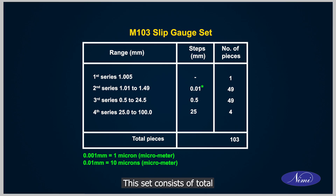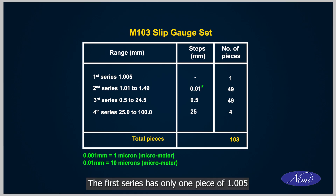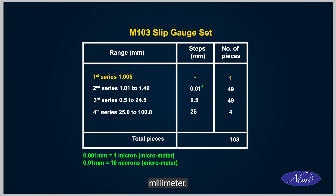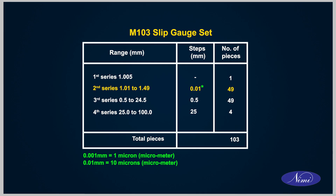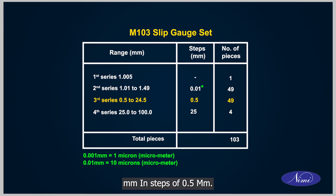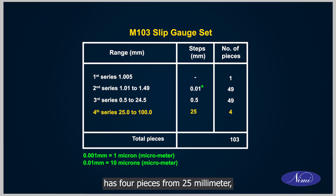M103: This set consists of a total of 103 pieces in 4 series. The first series has only one piece of 1.005 mm. The second series has 49 pieces from 1.01 to 1.49 mm in steps of 10 microns. The third series has 49 pieces from 0.5 mm in steps of 0.5 mm. The fourth series has 4 pieces from 25 mm to 100 mm in steps of 25 mm.